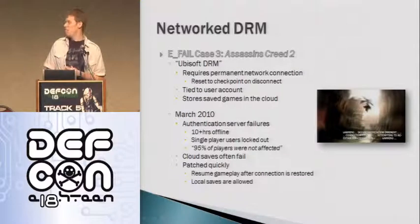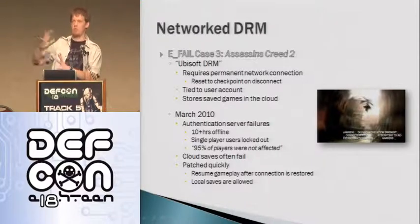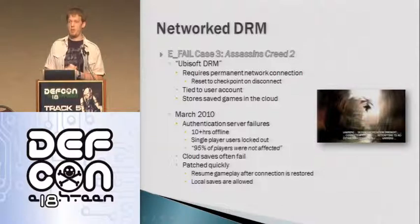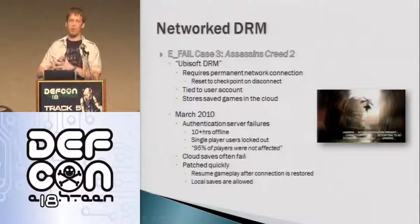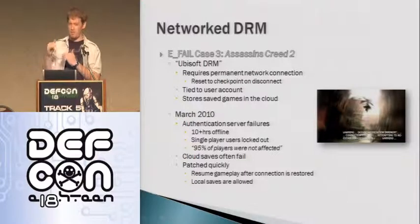The next one has been in the media quite extensively — that's Assassin's Creed 2. This is a different problem because before we had an activation limit checked at a single point in time. The Ubisoft DRM — it has a real name but nobody cares — requires a permanent connection. And I want you to fully understand this: permanent means that if you play single player and never intend to go online, you still need a perfectly fine internet connection. If it drops, you would originally be reset to a checkpoint. You can see that if I mess with the network, I can pretty much make somebody scream in front of their computer.